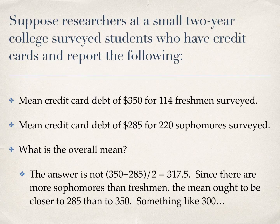This is a time when you would use a weighted mean. Because there are more sophomores than freshmen, I would expect the weighted mean to be something closer to $285 than to $350 — maybe something like $300. That's just a guess.